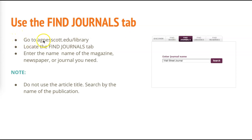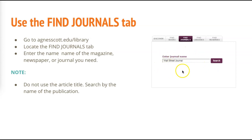Start at the library homepage at agnescott.edu/library, click on the Find Journals tool, and then enter the name of the magazine, newspaper, or journal you need. In this case I'm looking for the Wall Street Journal. If you've got an article from the Wall Street Journal that you want to find, you don't put in the title of the article — you put in the Wall Street Journal.